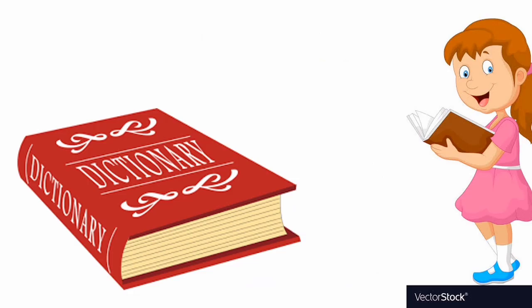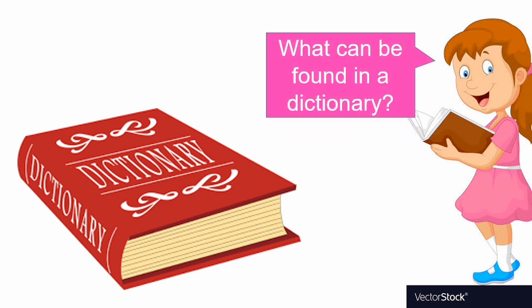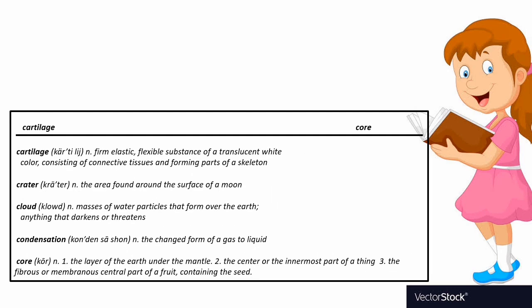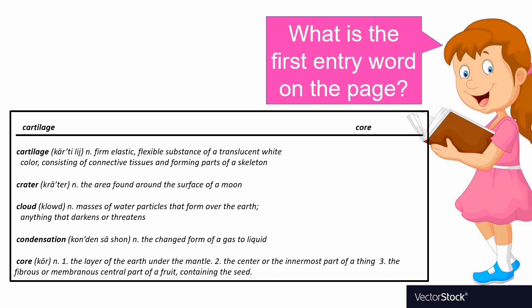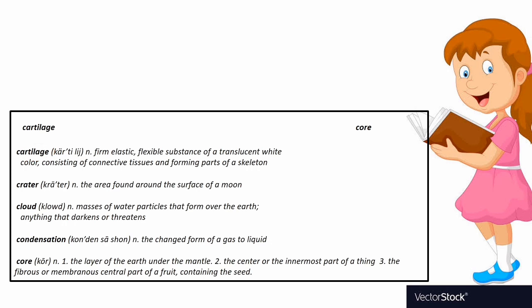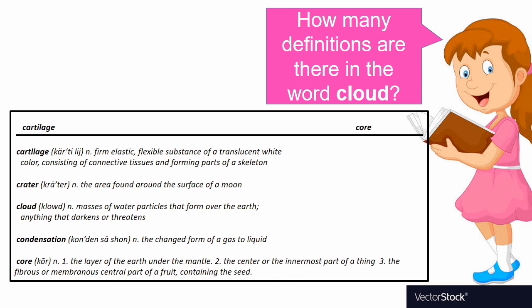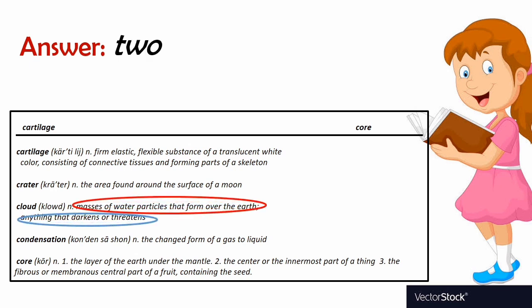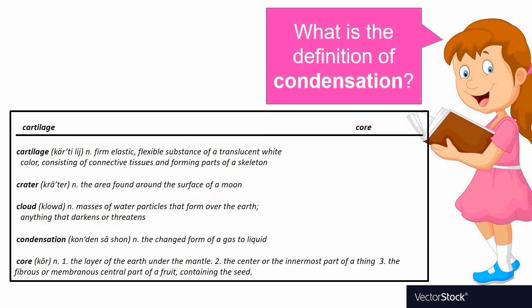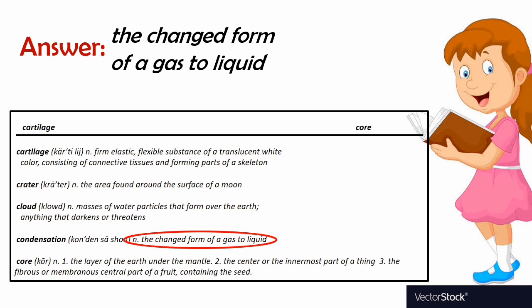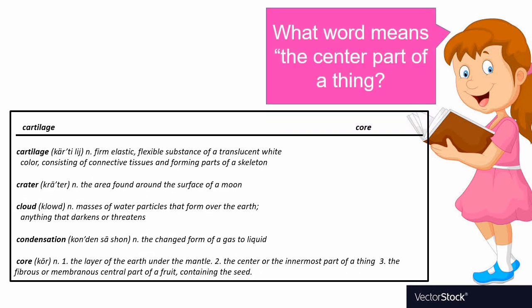This is a dictionary. What can be found in a dictionary? What is the first entry word on the page? The answer is cartilage. How many definitions are there in the word cloud? The answer is two. There are two definitions of cloud. What is the definition of condensation? Condensation is the change of form from a gas to liquid. What word means the center part of a thing?